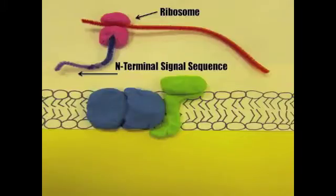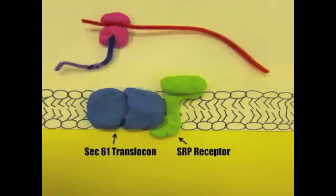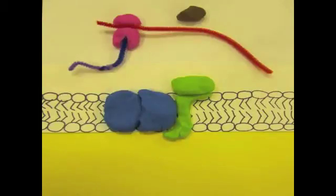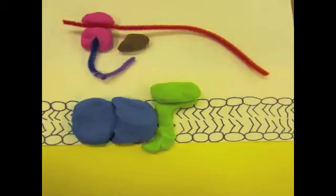During co-translational import into the endoplasmic reticulum, the protein is translocated into the ER simultaneously with translation. A ribosome translates the mRNA sequence into a protein made of amino acids. As the signal sequence on the N-terminus of the growing polypeptide chain emerges from the ribosome, a signal recognition particle, or SRP, binds to it, arresting translation.